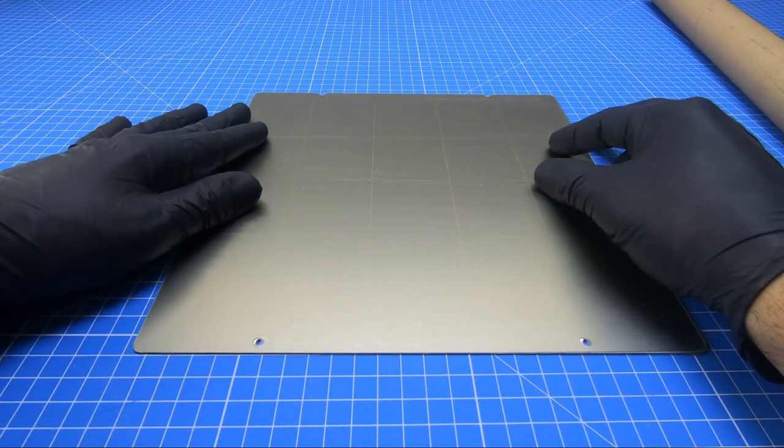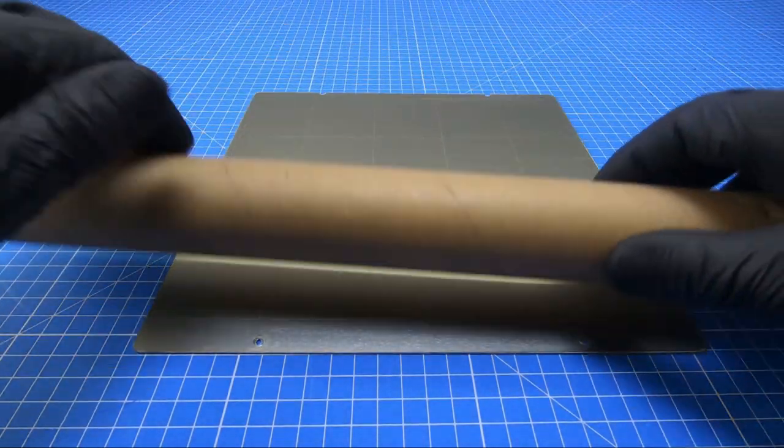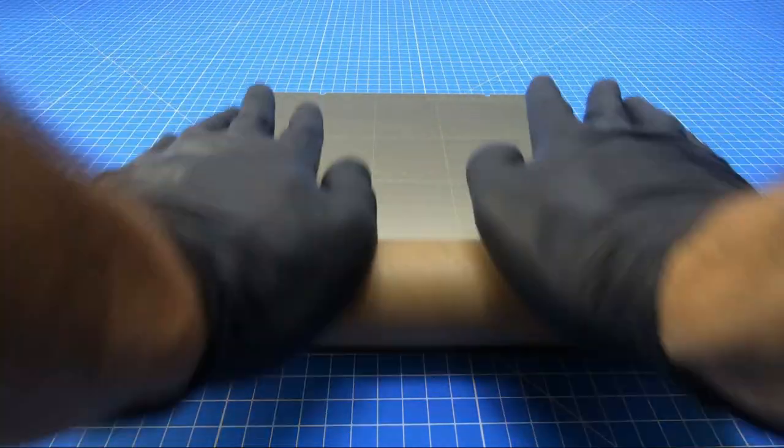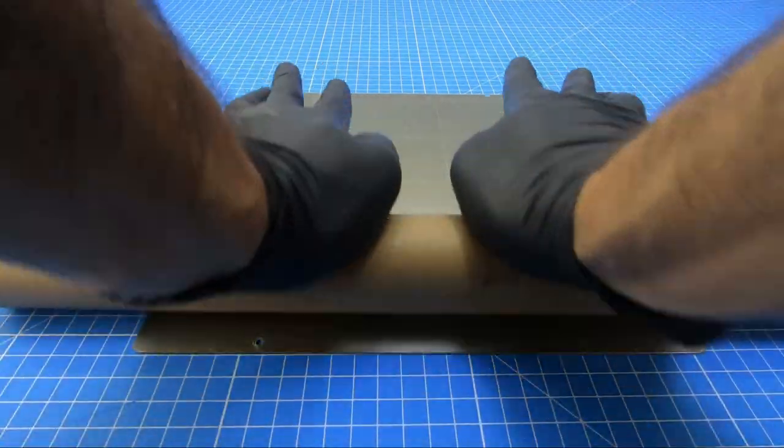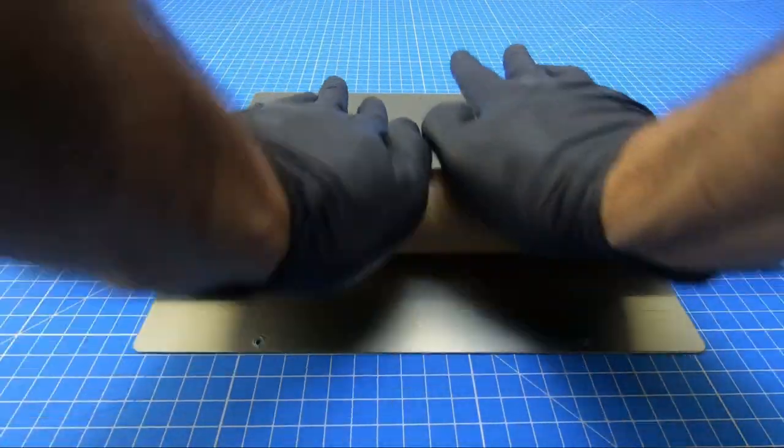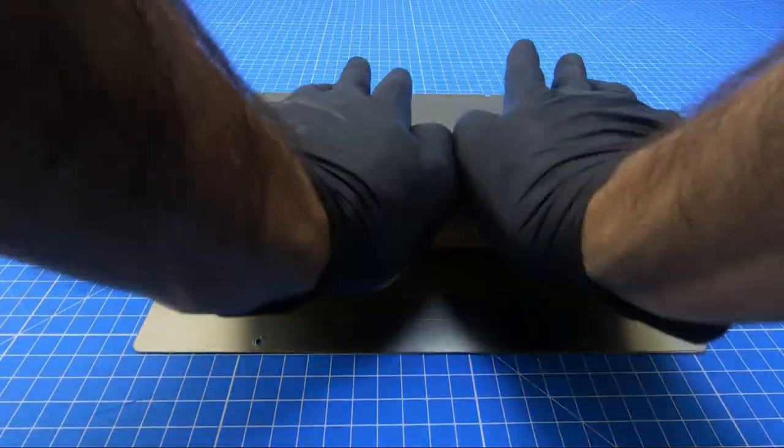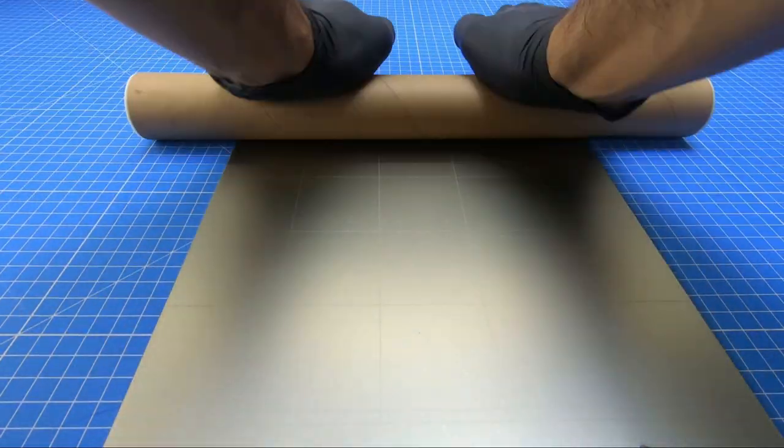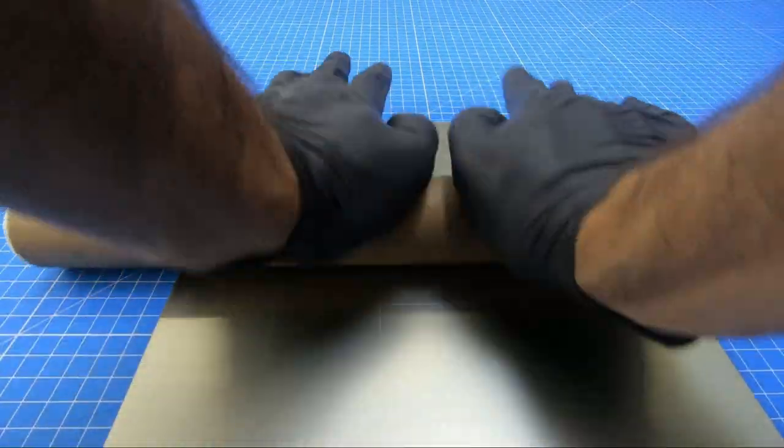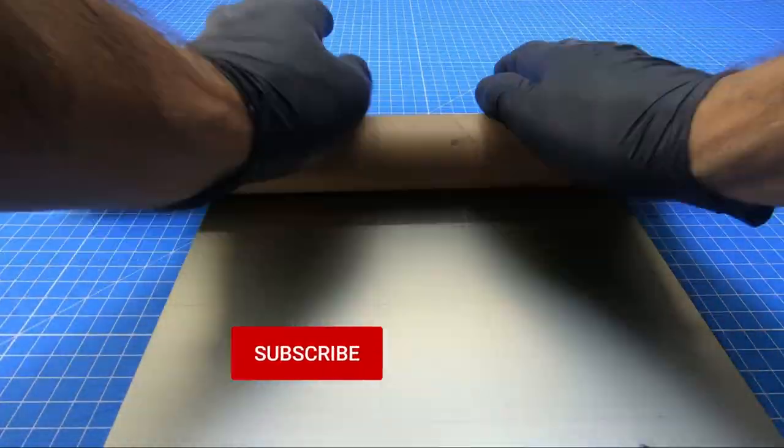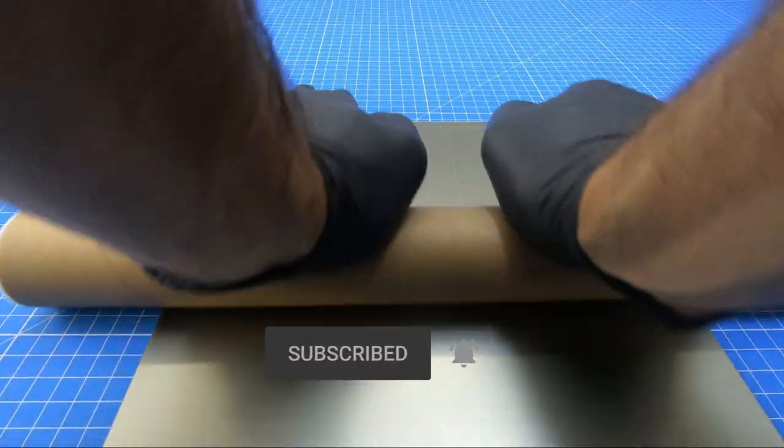Use something soft enough not to scratch the surface but hard enough to push down the PEI sheet onto the steel sheet. I used this paper roll that came with the 3D printer I assembled. If you're curious which printer, stay around because that'll be my next video.